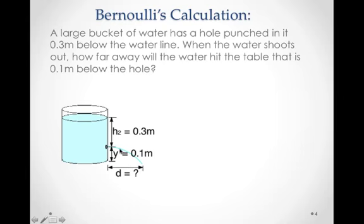So this is a typical problem you'll see with Bernoulli's calculations. We have a large bucket here, water, and a hole has been punched in it down here, and typically this hole is much, much smaller than this cross-sectional area here in these type of problems.